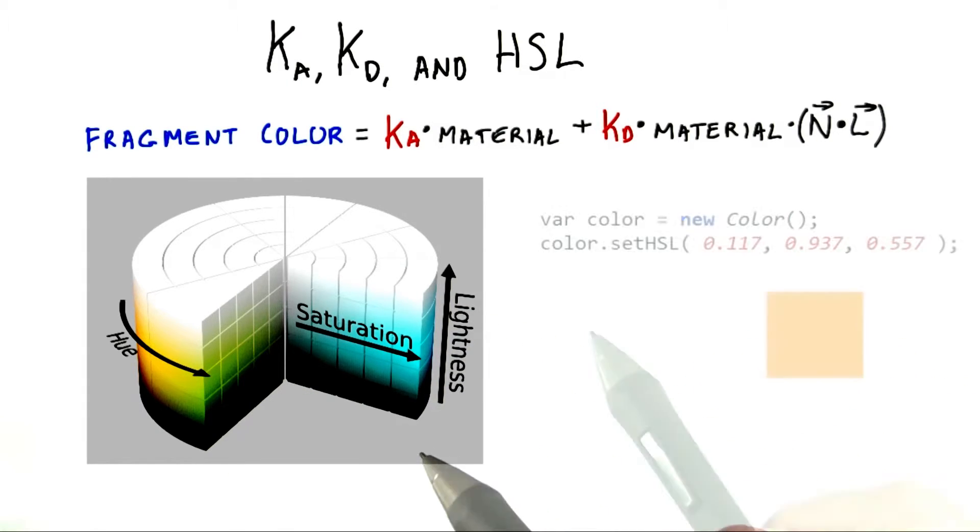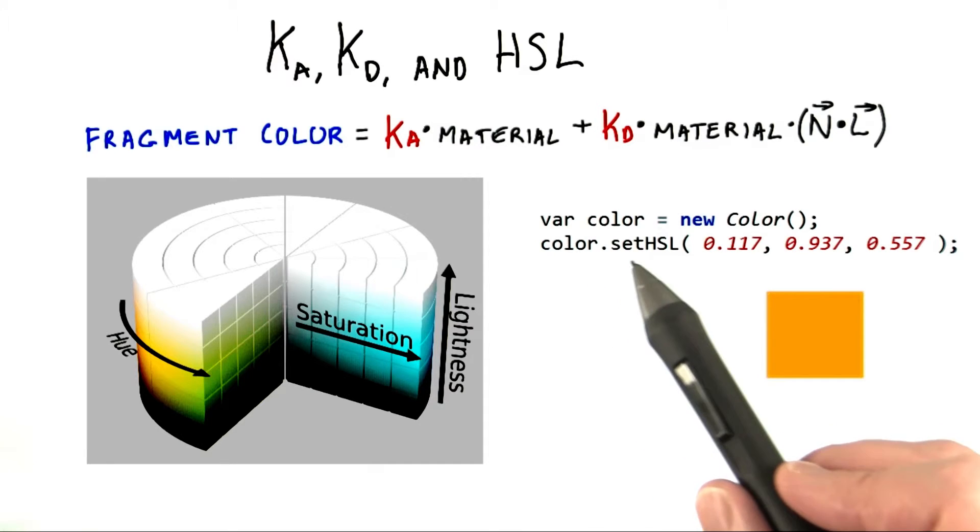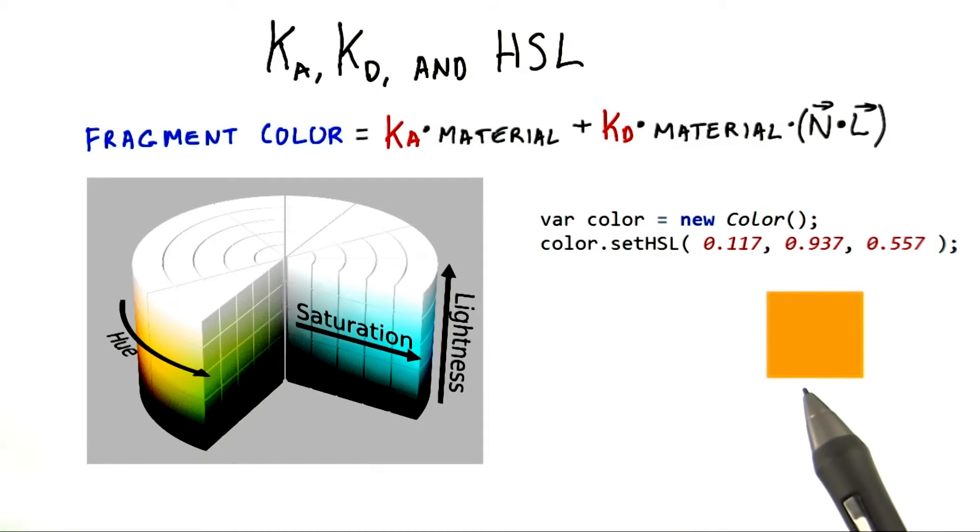Here's a visualization of the color space. The 3.js library lets you use HSL to set colors. For example, this code gives a mustard color.